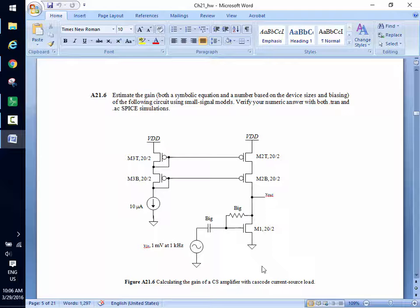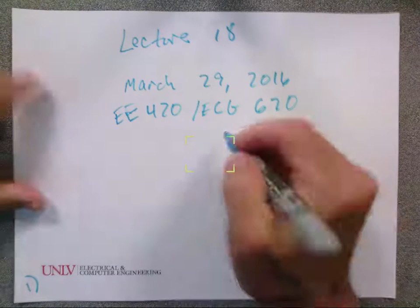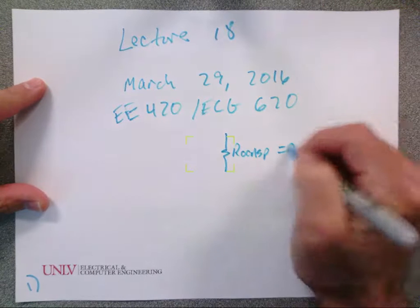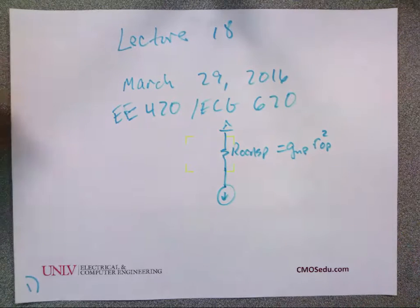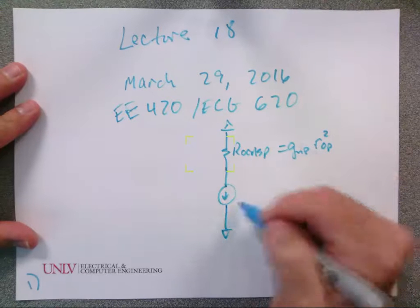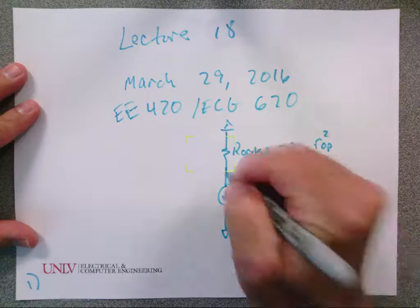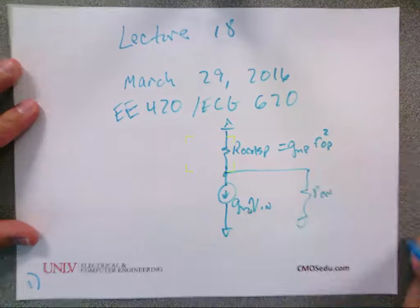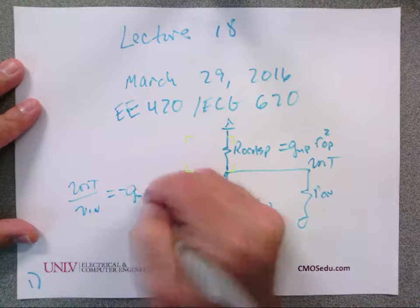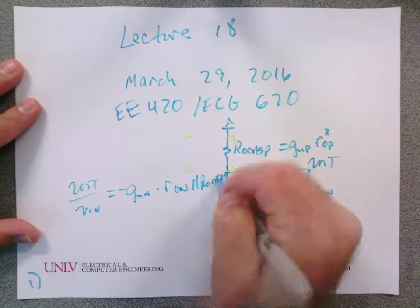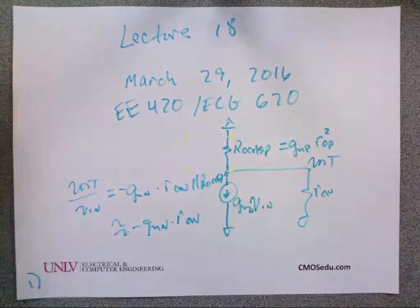So the gain — if I write V_out over V_in equals minus G_MN times R_out_N in parallel with R_out cascode P, which is approximately minus G_MN times R_out_N, because R_out cascode P is so much larger.